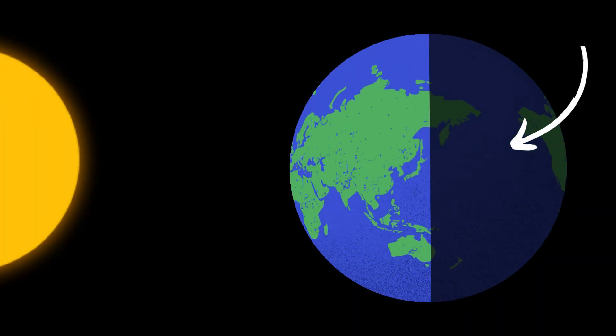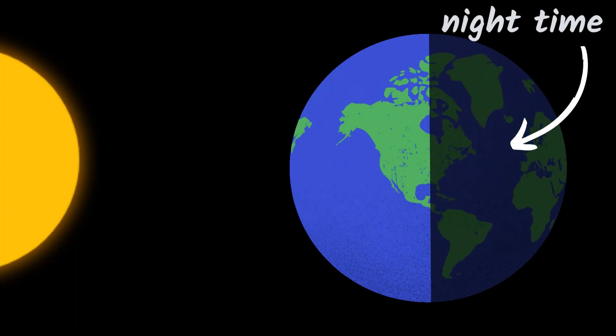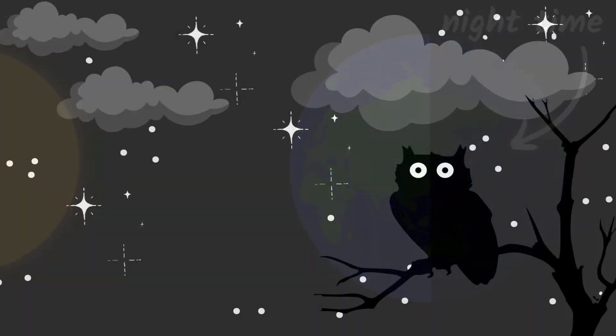When the part of the Earth you are in has turned away from the sun, it's nighttime. The sun has set and it's dark and cold.